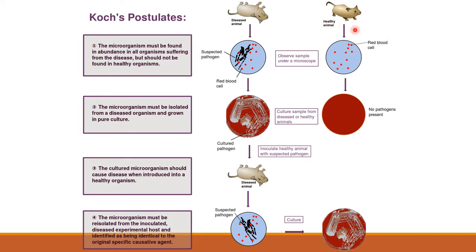In a healthy animal, if you observe a blood sample under the microscope you will only see red blood cells, and if you culture that sample you will see no pathogen present. But when a sample is taken from a diseased animal and observed under the microscope, you will see some suspected pathogens along with red blood cells. If you culture that on a culture medium, there is growth of a particular bacteria. If that culture is inoculated into another animal, the animal dies. From that animal you will observe the same suspected pathogen, and this is how the cycle continues.